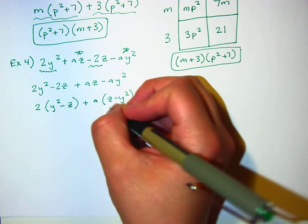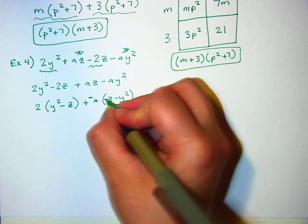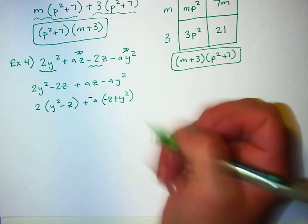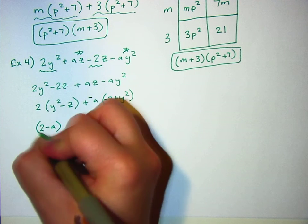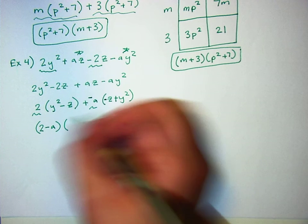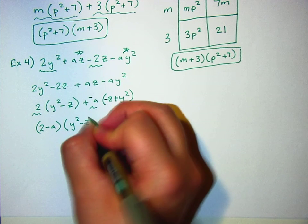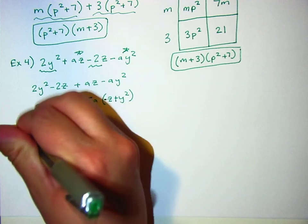So if I make this a negative a and pull a negative out, that makes this negative and this positive, which makes it work. So that would be 2 minus a as my leftovers here, and the takeout that's in common is the y squared minus z. This one was negative z plus y squared, but those are the same thing because I can just rearrange it.